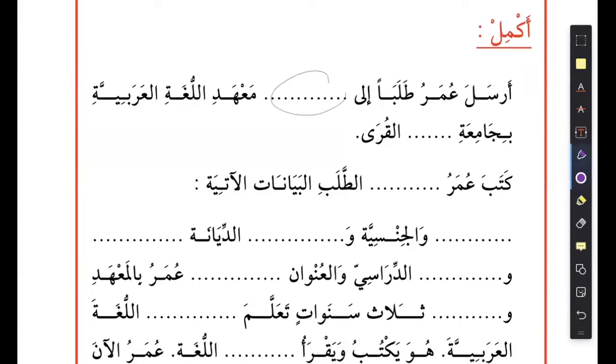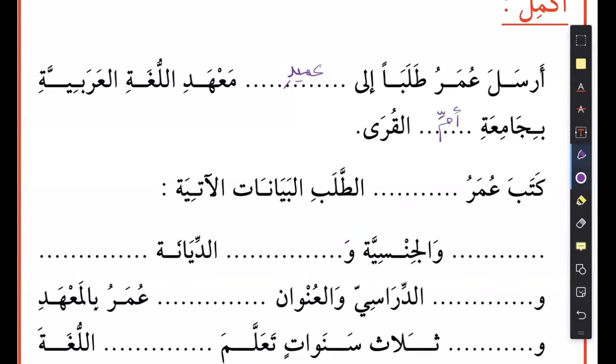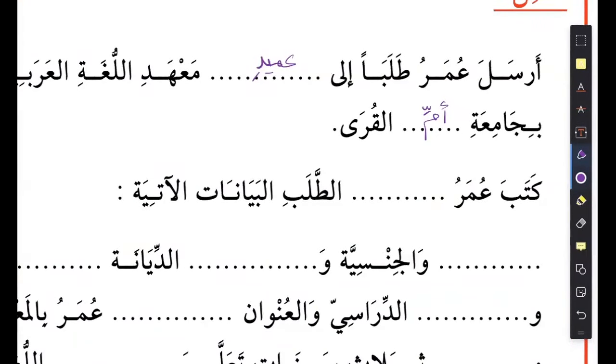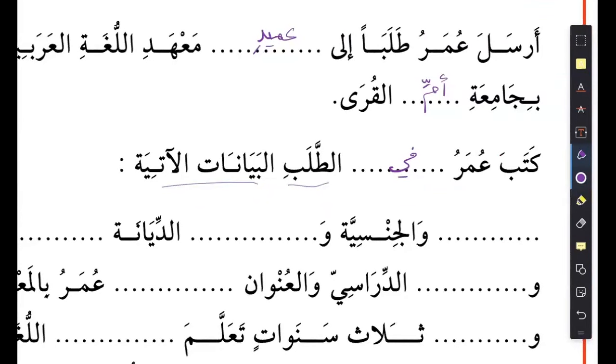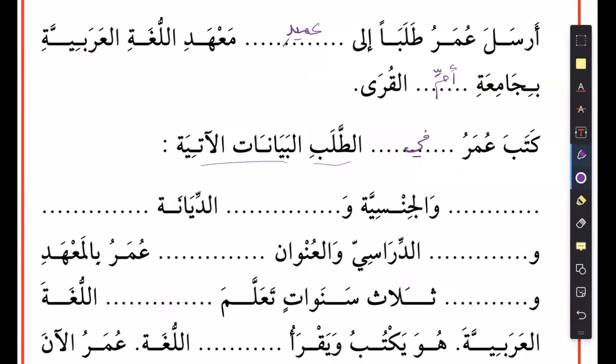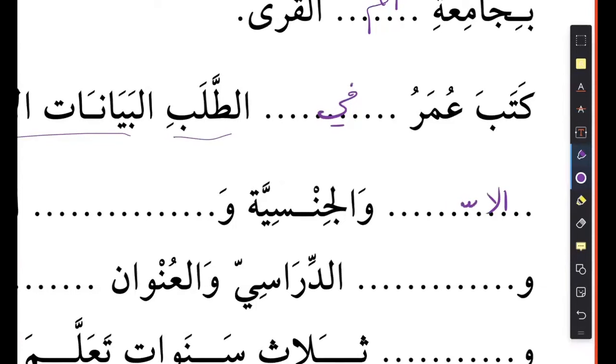So it says: arsala Umar talaban ila - then it says ma hadil loghatil arabiya. Umar sent a request to where - they're telling you ma hadil loghatil arabiya. You can say amid here - the dean. So he's sending to the dean of the institution of Arabic language, bi jami'ati ummi al-kura. Then it says: kataba Umar al-talabi al-bayanaat al-atiyah. Here we need a harf al-jaar, a preposition. What preposition goes here? Al-talab is the request, al-bayanaat al-atiyah is the following information - use fi. So Umar wrote in the request the following information.